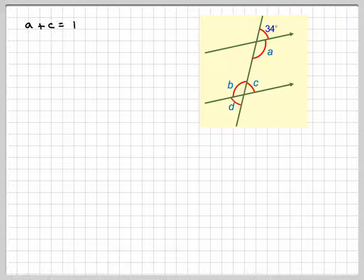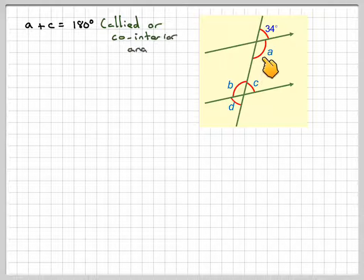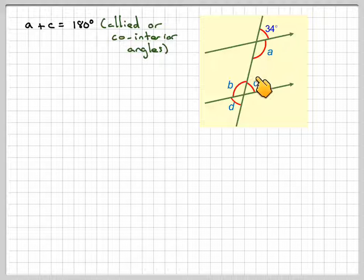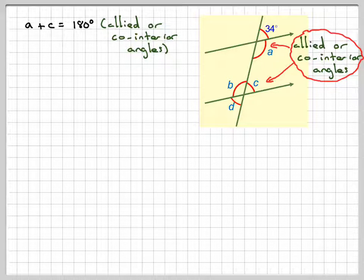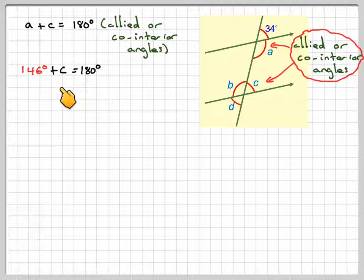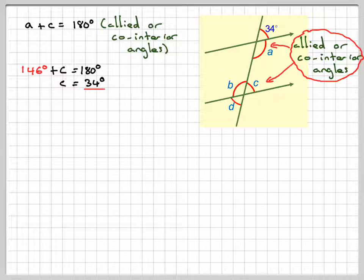So, the third method is to say these two here add up to 180 degrees, and they're known as co-interior or allied angles. And therefore, we get 146 plus C equals 180, C equals 34.